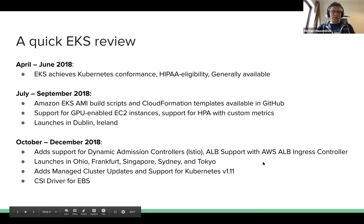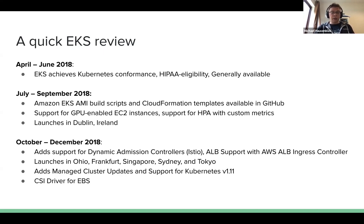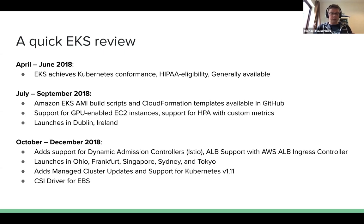We went GA a little more than a year ago and have provided a number of things along the way, mostly based on community requests. These include support for GPU-enabled EC2 instances, horizontal pod autoscaler with custom metrics, dynamic admission controllers, load balancer support for the ingress controller, more regions including Bahrain recently, and in end of 2018, Kubernetes 1.11 support.